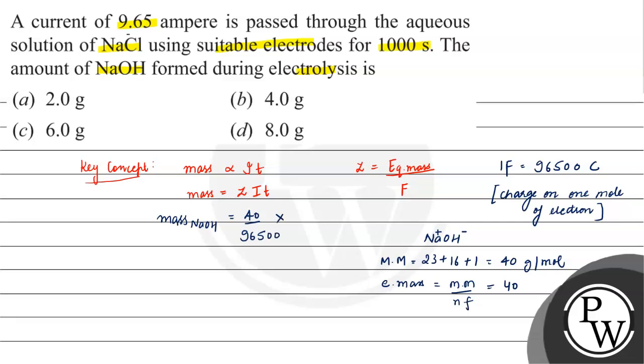I is given as 9.65, T is given as 1000 seconds. Solving this, the mass will be equal to 4 grams.